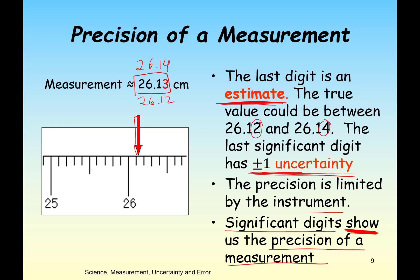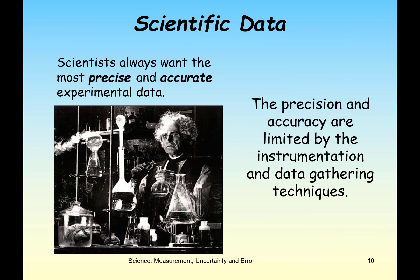We can also talk about precision in terms of repeated trials. If the repeated trials are the same, that indicates high precision; if they're very far off, that indicates low precision — similar to the dartboard analogy. The precision and accuracy of our experimental data are always limited by the instrumentation and data gathering techniques.